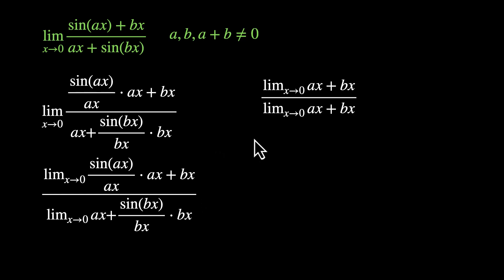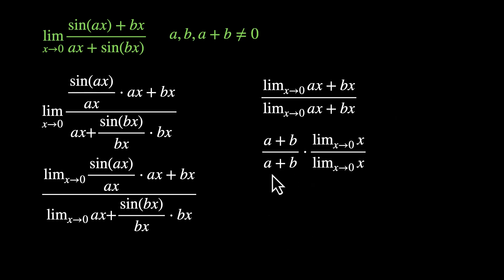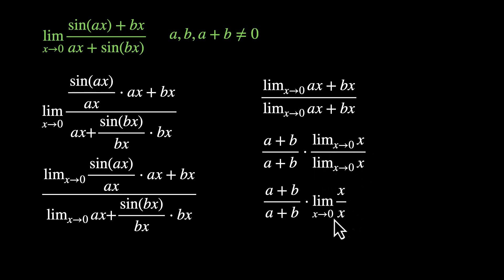The answer looks like 1, but let's not miss the steps. a + b is common. Limit x→0 of x by limit x→0 of x — we can merge the limit. This is limit x→0 of x/x = 1. So the answer is 1 times 1 = 1.